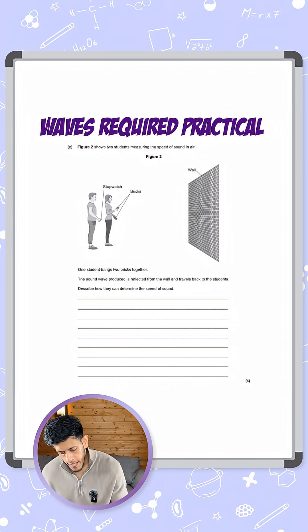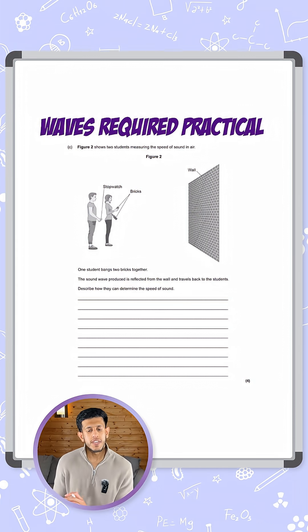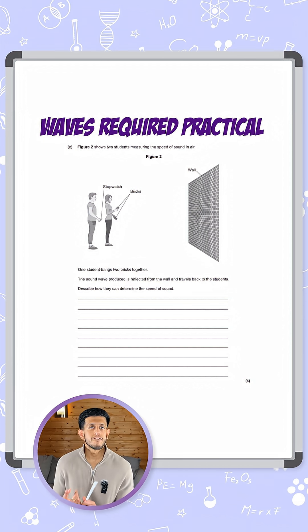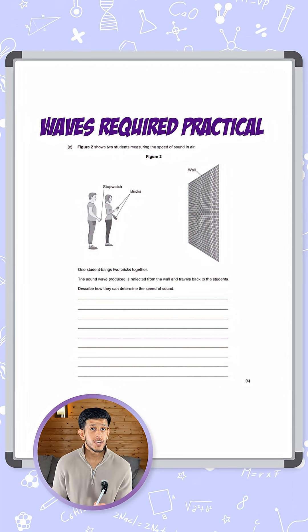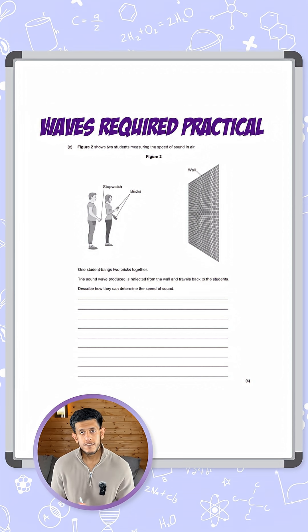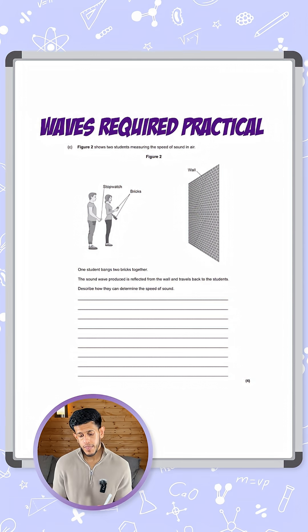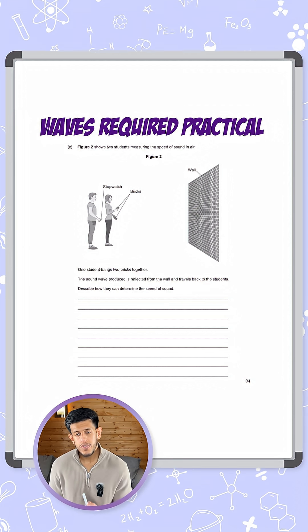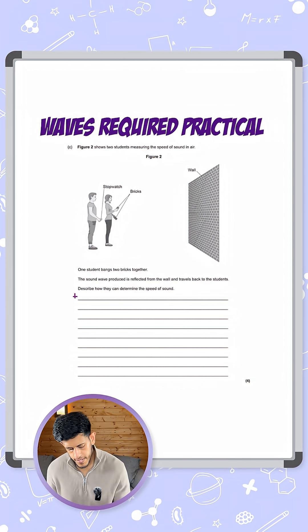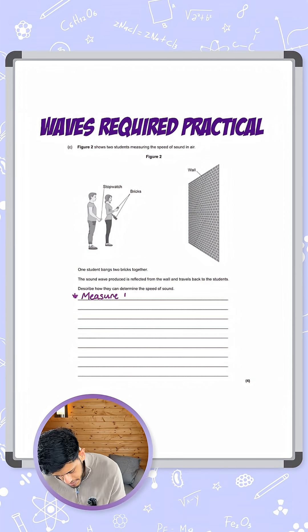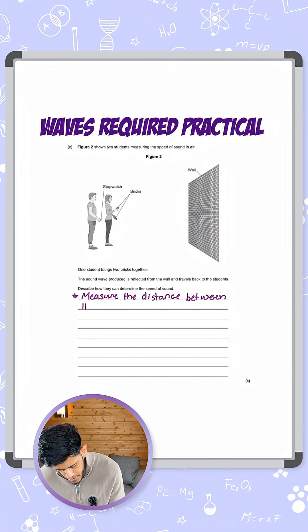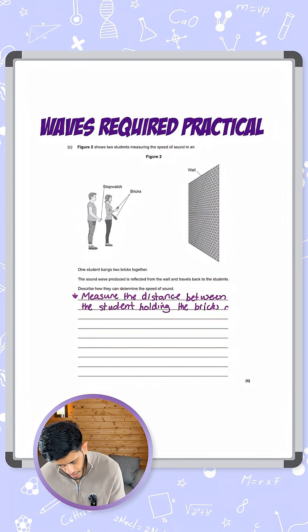The first thing is that we need to know what each student is going to do and we need to find the speed. So we need to think about the equation and what bits we're going to use for it. Student one is going to be banging the bricks, the woman there with the two bricks. We need to know the distance between her and the wall. So the first step is measure the distance between the student holding the bricks and the wall.